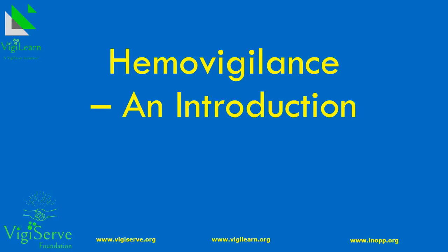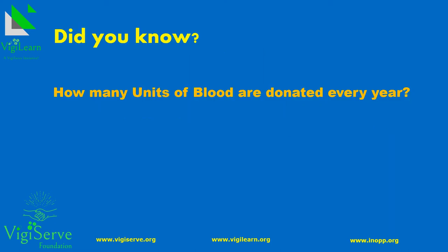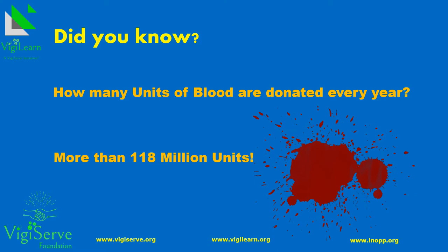Let us learn about Hemovigilance, also known as Blood Safety or Blood Vigilance. Do you know how many units of blood are donated every year in this world? It is more than 118 million units.